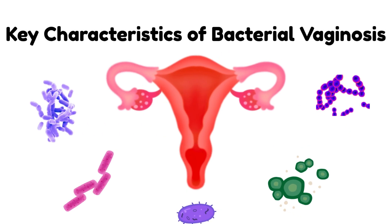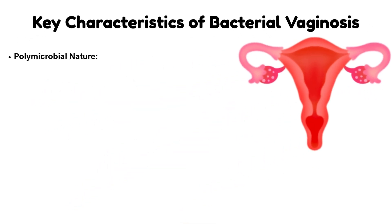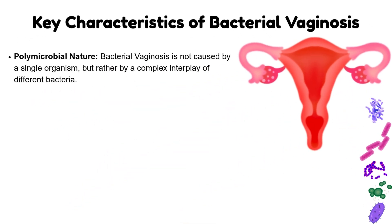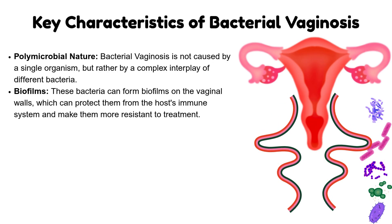In summary, key characteristics of bacterial vaginosis include its polymicrobial nature — it is not caused by a single organism, but rather by a complex interplay of different bacteria. These bacteria can also form biofilms on the vaginal walls, which protect them from the host's immune system and make them more resistant to treatment.